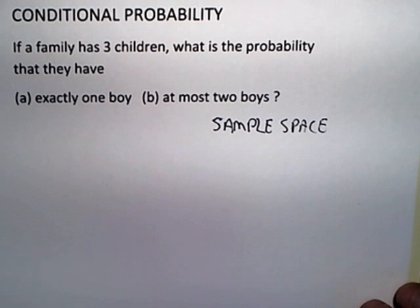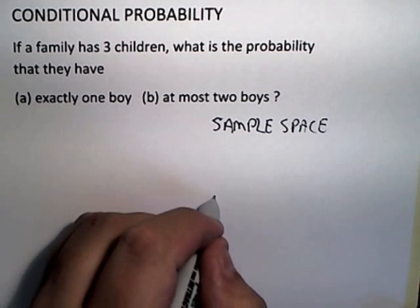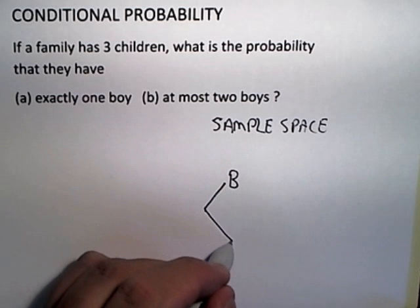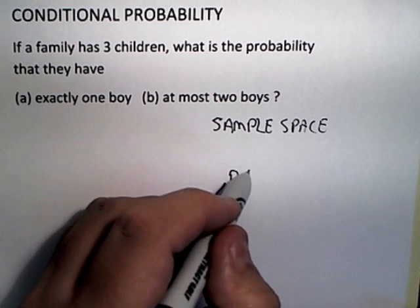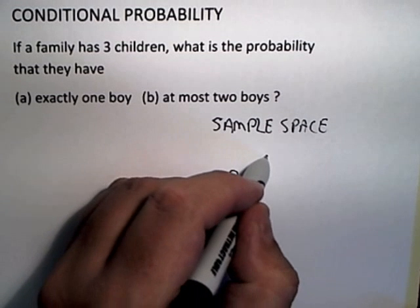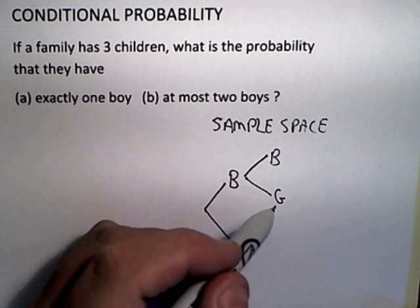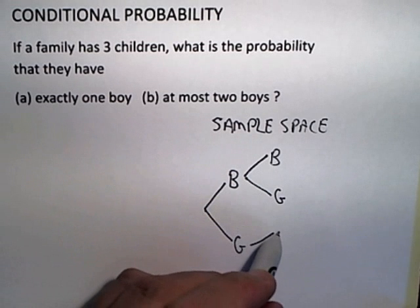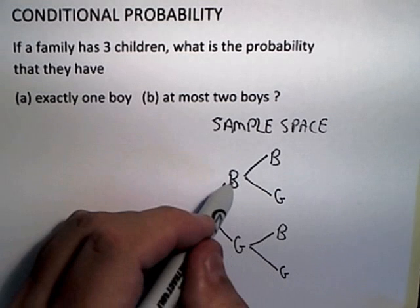As I often do, I'm going to do it with tree diagrams. For the first child, there could be a boy or there could be a girl. Once a family has a boy, the next child could either be a boy or a girl. If the first child was a girl, the second child could either be a boy or a girl.